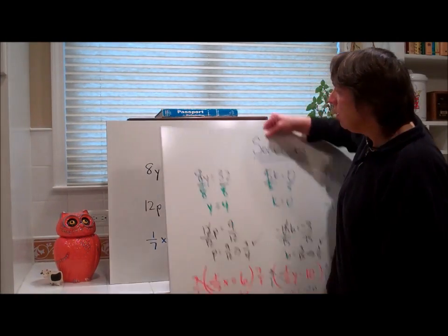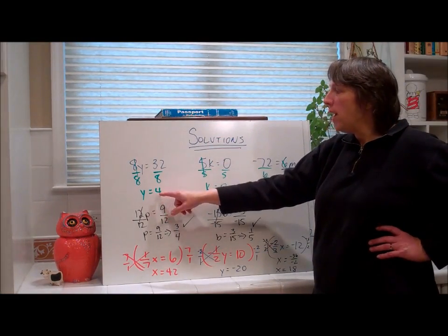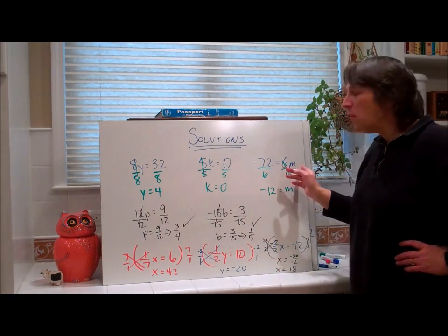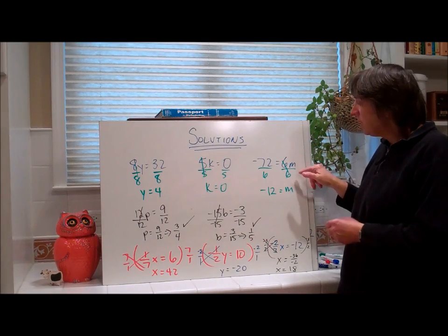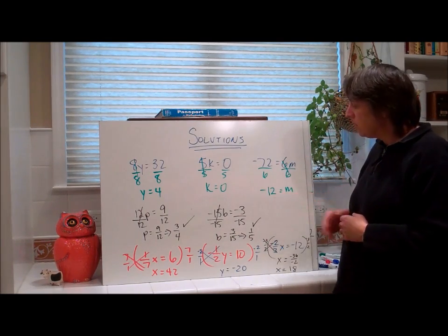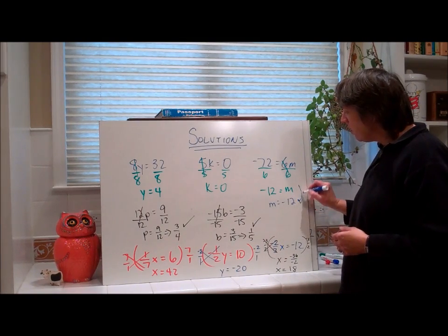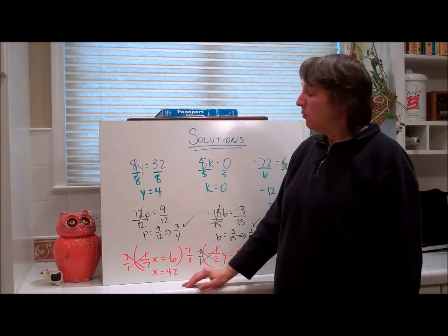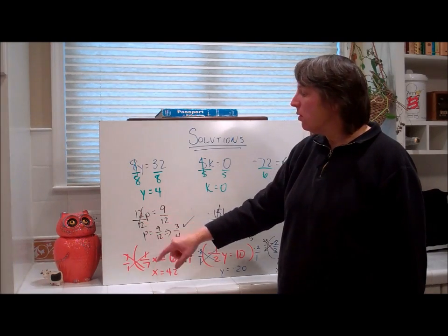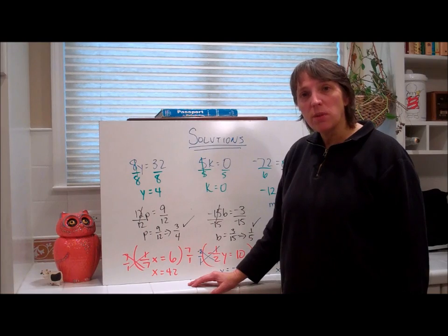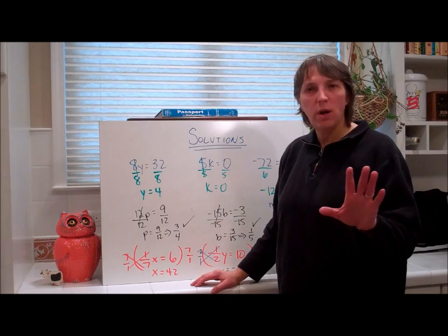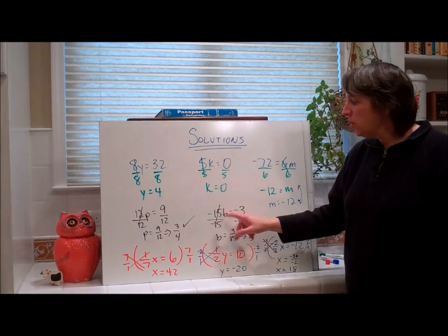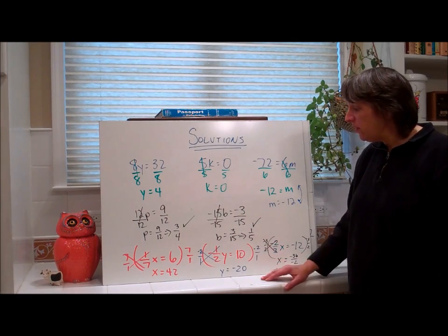Welcome back. Here are the solutions — see all my work. You should have gotten y equals 4 because you're dividing both sides by 8. Here you should get k equals 0 because 0 divided by 5 is 0. Here the m is on the other side — you still treat it the same way, you still divide both sides by 6, so m equals negative 12. On the next one, some of you might have divided both sides by 9. Remember, whatever number is with the variable is the number you divide both sides by. You'll get fractions on some answers — when you get 9 twelfths, simplify it to 3 fourths. I want fractions, not decimals. Divide both sides by negative 15: negative 3 divided by negative 15 is positive 1 fifth.